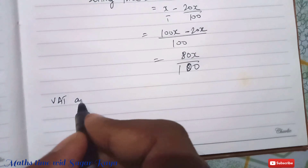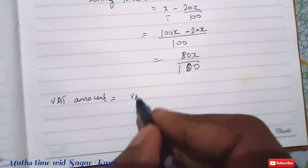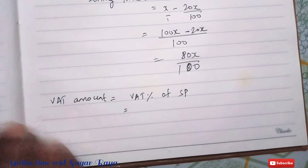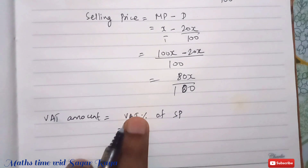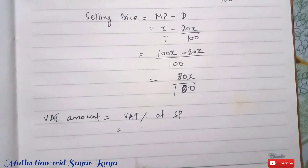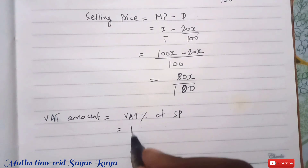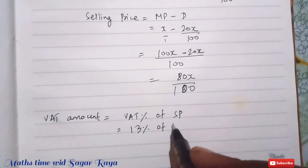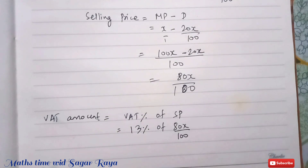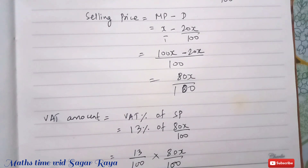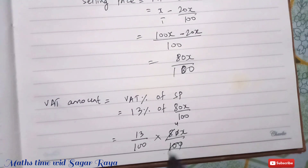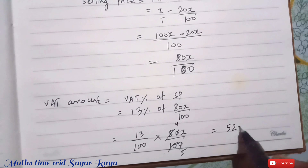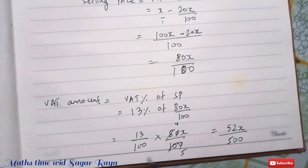VAT is 13%, and VAT amount is always calculated on selling price. So VAT amount equals 13% of SP, which is 13 over 100 into 80X over 100. Simplifying by canceling zeros, we get 13 times 4 over 100 times 5, which gives 52X over 500.